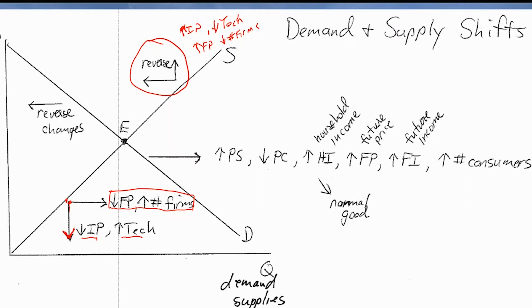But demand is going to shift around potentially as well in response to changes in substitute goods, prices of complement goods, household income, future price again. So notice future prices here and future prices here - we've got it in both the demand function and the supply function. We've got future income, which only affects demand, not the individual supply, and we've got the number of consumers or buyers in the marketplace.